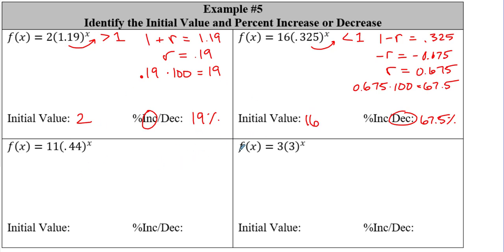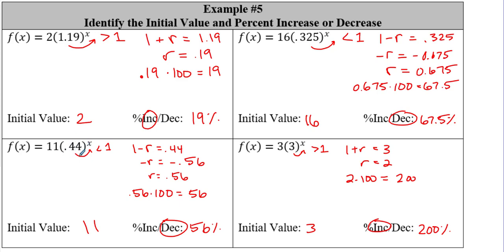For 0.44, which is less than one, use 1 - r = 0.44; solving gives r = 0.56, so 56% decrease with initial value 11. For the last one, 3 is greater than one, so 1 + r = 3; r = 2, times 100 is a 200% increase. You can have an increase over 100% — like a phenomenal investment return. Initial value is 3.